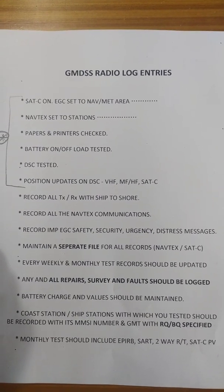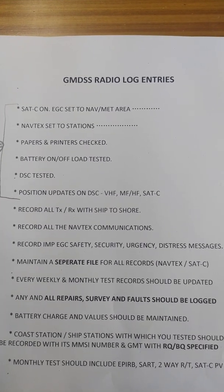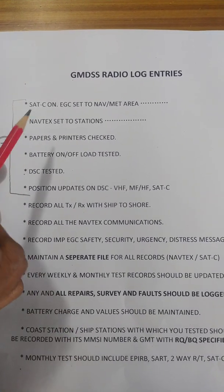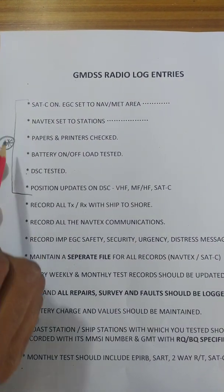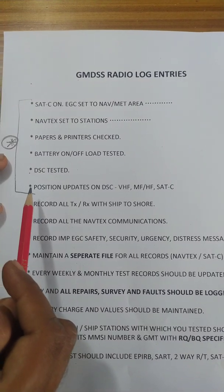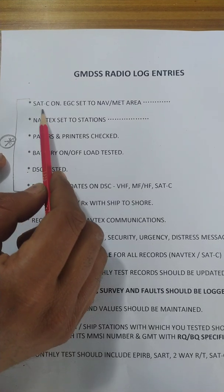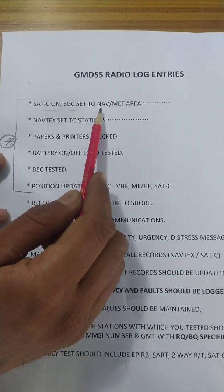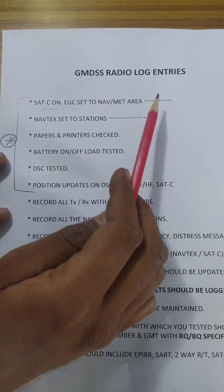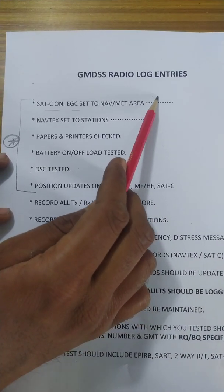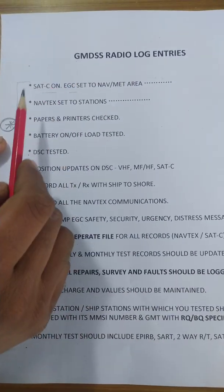Good afternoon. The next entry we will be discussing is the GMDSS radio logbook entry. These six lines are to be written at the start of every date. The lines include: SATC is on, and EGC is set to NAV or MET area — whichever area you are going to be in. So if you are in NAV area 9, you will be writing NAV area 9, 10, or whichever area you are going to go through.